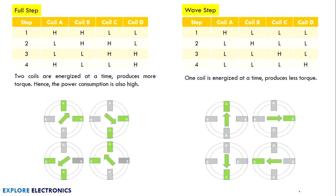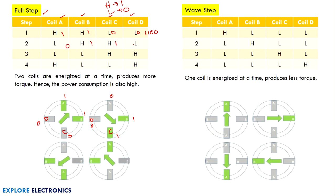For full step rotation, we energize the coils A, B, C, D in sequence. H indicates value 1 and L indicates value 0. The first step passes 1, 1, 0, 0 to coils A, B, C, D respectively. The next value shifts to 0, 1, 1, 0; then 0, 0, 1, 1; then 1, 0, 0, 1. The values shift and four steps are required to complete one full rotation. This is full step rotation — two coils are energized at a time, producing more torque but also higher power consumption.